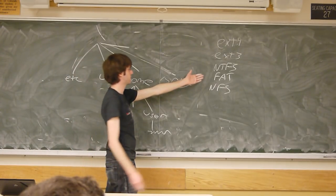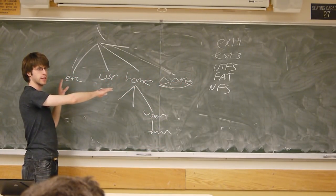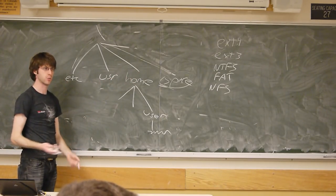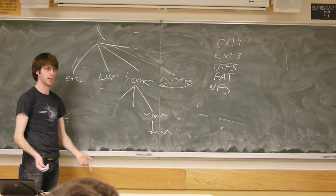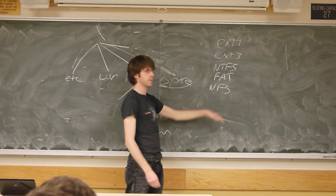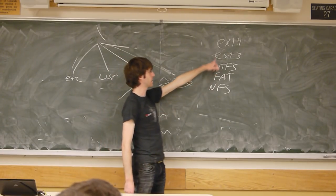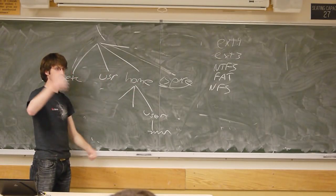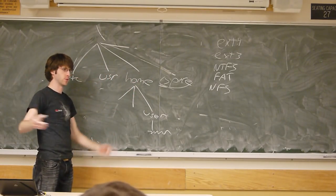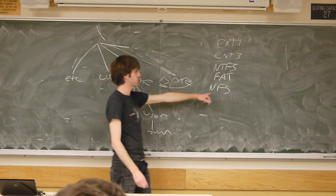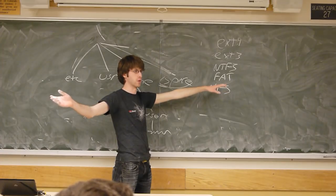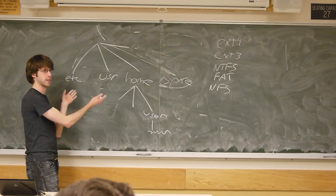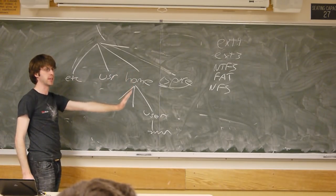But the cool thing about all these file systems is this abstraction applies to all of them — we expect to have directories on all of them, we expect to be able to read and write files, we expect to be able to traverse directories. How these things are actually implemented differs by quite a lot. Things like EXT4, which is a journaling file system, doesn't really store directories the same way. And there's things like NFS, a distributed file system, which can be spread out over machines. So the file system looks the same to us, but how it's actually implemented can be completely different.